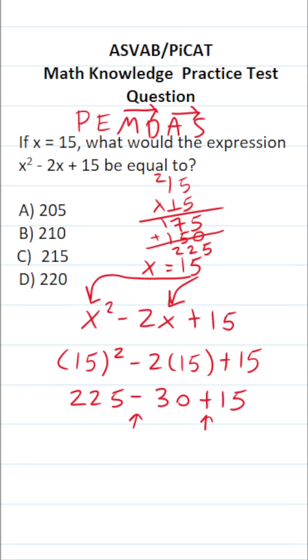225 minus 30 is going to be 195. Of course, you could do that off to the side if you can't do it mentally. 225 minus 30: 5 minus 0 is 5. 2 minus 3 we can't do, we're going to borrow. This is going to become 1, this will become 12. 12 minus 3 is 9. 1 minus nothing is 1. So that's how I got 195 plus 15.